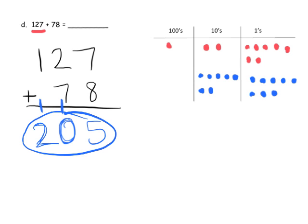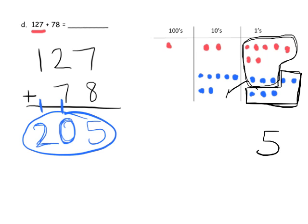So now we can start bundling and putting things together. So we know that we have 7 up here, 8 down here. So that's 15 all together. So that means we can bundle 10 of them together. And here's our 10 plus we have 5 left over.